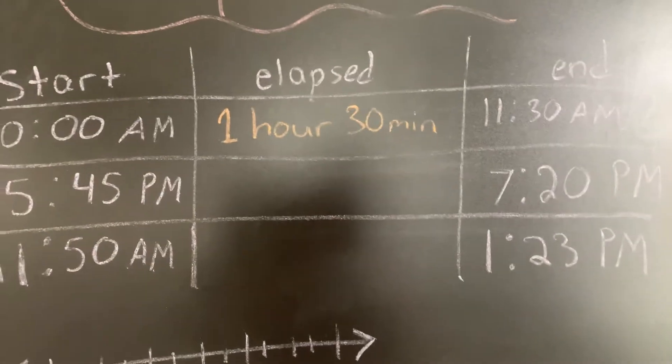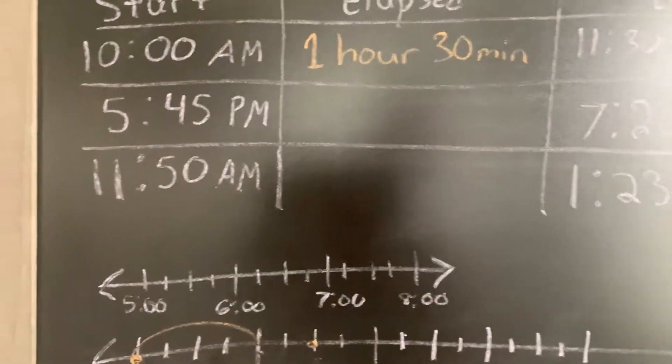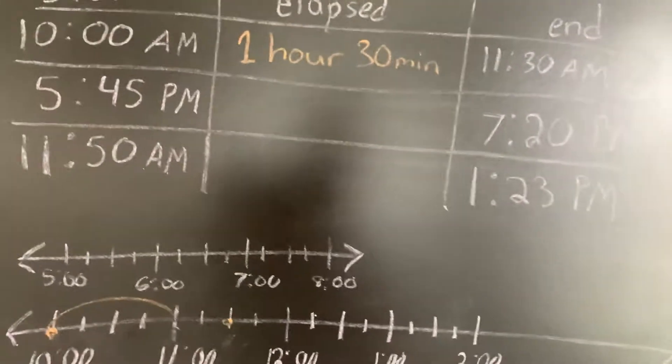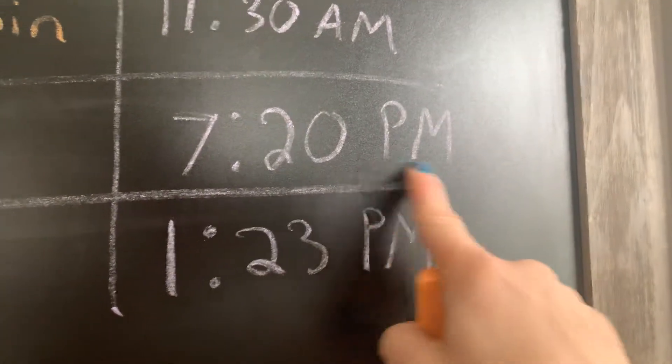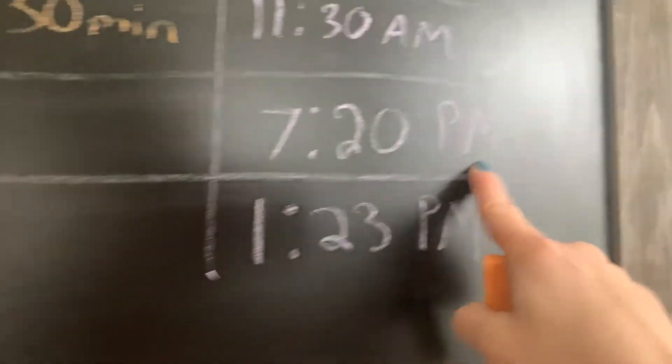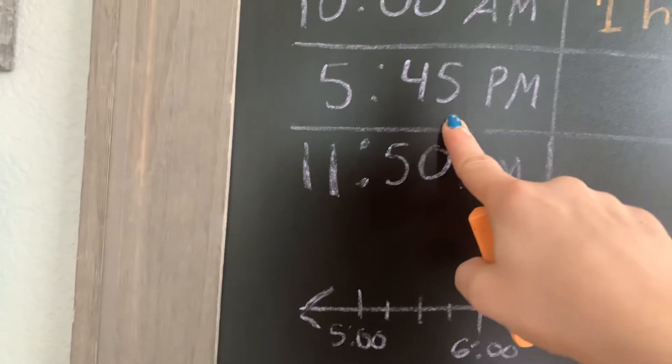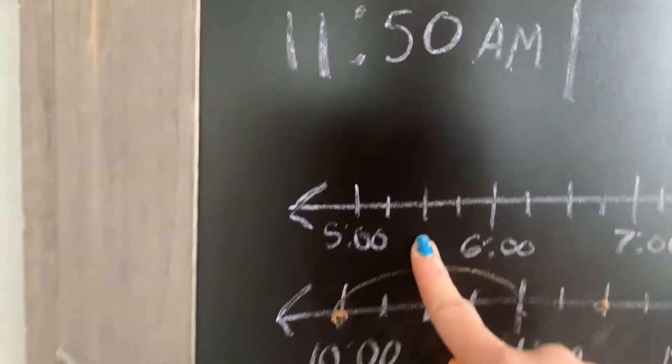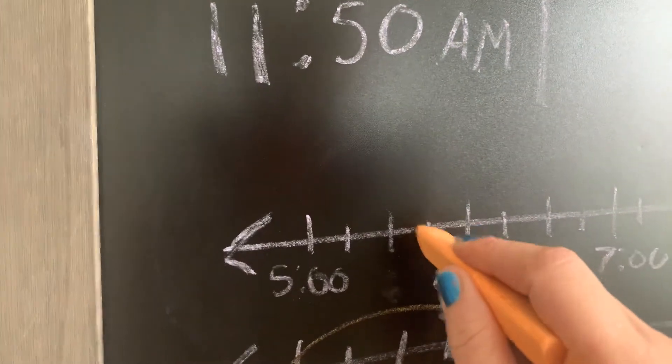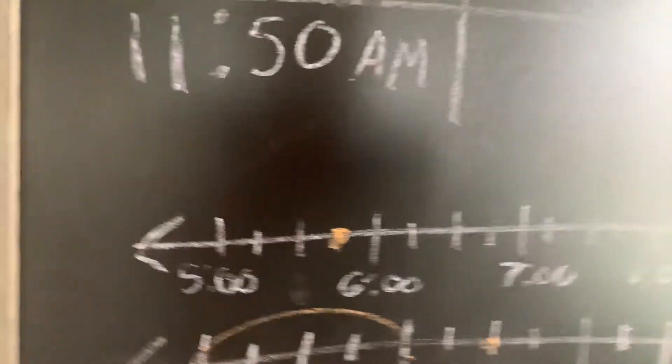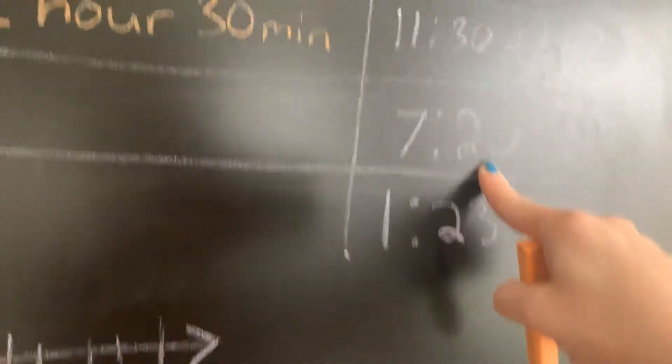So I started off with the easy one. Next, I made it a little harder because I didn't include just the quarters. I started at 5:45 PM, and I'm going to end at 7:20 PM. So 5:45 PM up here. So it's 5, 5:15, 5:30, 5:45. And now I'm going to go to 7:20.